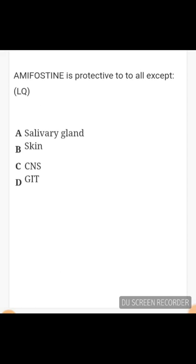Amifostine is protective to all except - options are salivary gland, skin, CNS, and GIT. It does protect salivary glands (reduces xerostomia), GIT (prevents esophagitis), and skin. Amifostine is a cytoprotective drug. The answer is CNS - it does not protect the central nervous system.